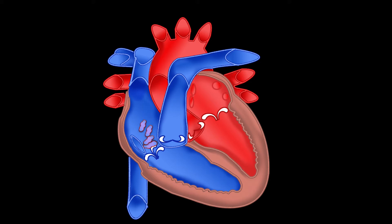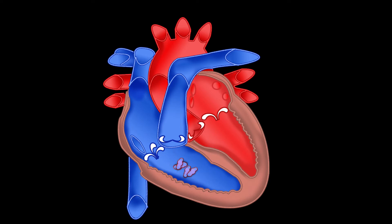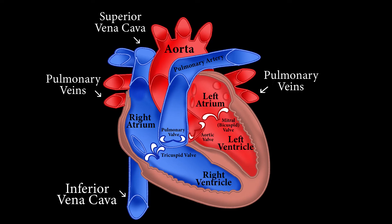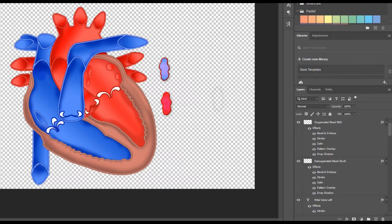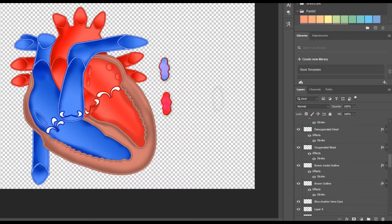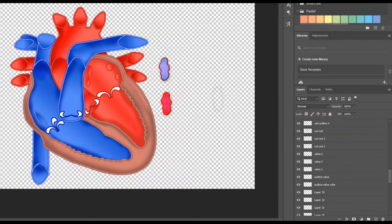As the atrium contracts, blood flows from the right atrium into your right ventricle through the open tricuspid valve — tri meaning three. All the diagrams I found had two valves due to the 2D diagram, so I took the liberty of drawing the heart in Photoshop with well over 50 layers to help with the illustration.